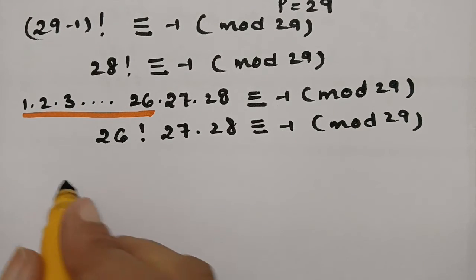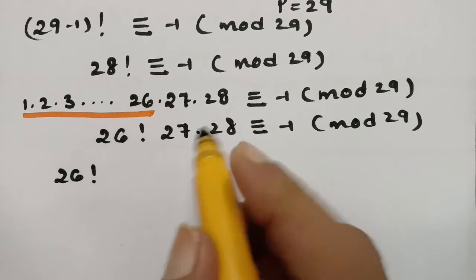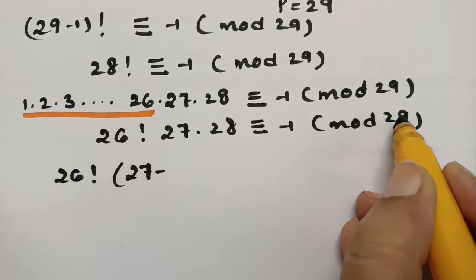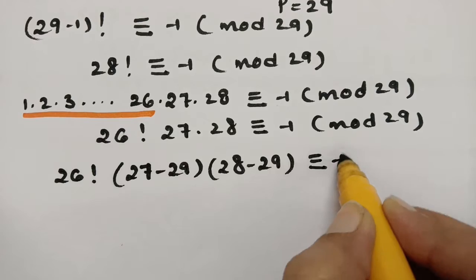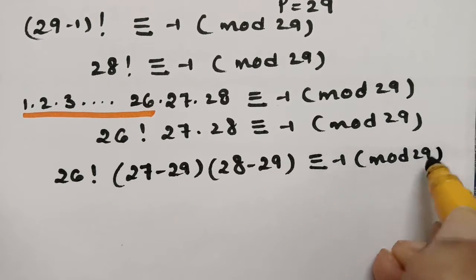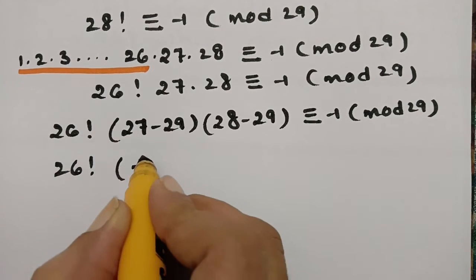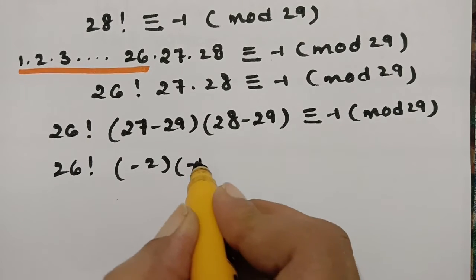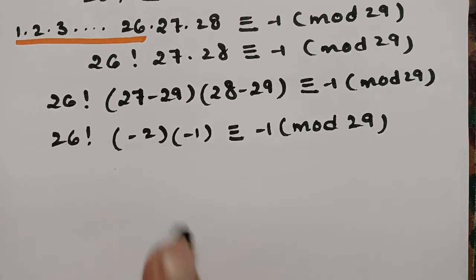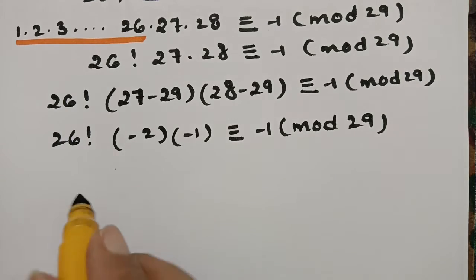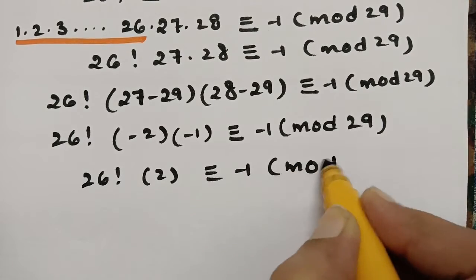Now I need to find 26!. When 27 is divided by 29, the remainder is 27 − 29 = −2. When 28 is divided by 29, the remainder is 28 − 29 = −1. So we have: 26! × (−2) × (−1) ≡ −1 (mod 29). Multiplying: (−2) × (−1) = 2, so 2 × 26! ≡ −1 (mod 29).